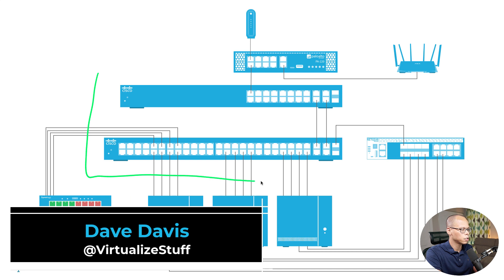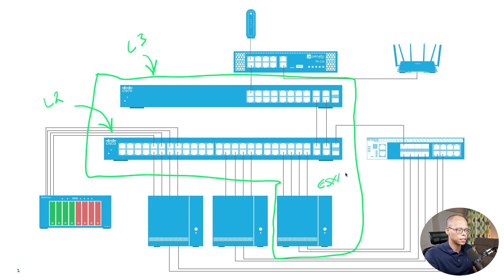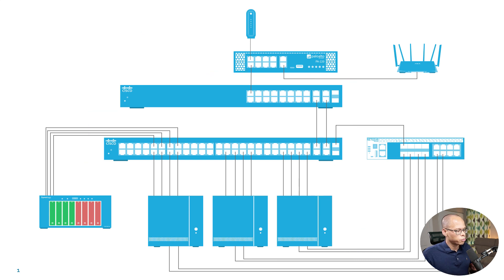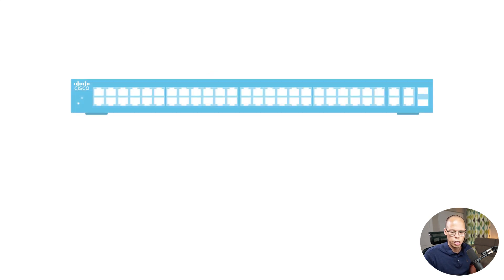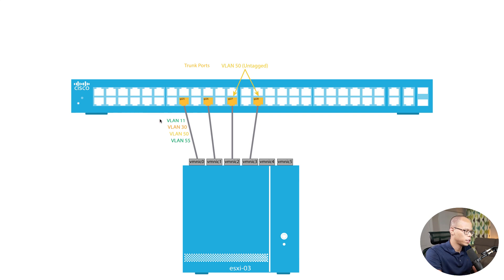In today's video we're going to focus on the SG300 switches. The top one is configured in L3 mode and the bottom one is configured in L2 mode. We're going to be focusing on ESXi3 as the host. The ESXi3 host connects to the Cisco SG352 port switch, and has six physical adapters, four of which are connected to the switch. The switch ports are configured in trunk mode, trunking VLANs 11, 30, 50, and 55.